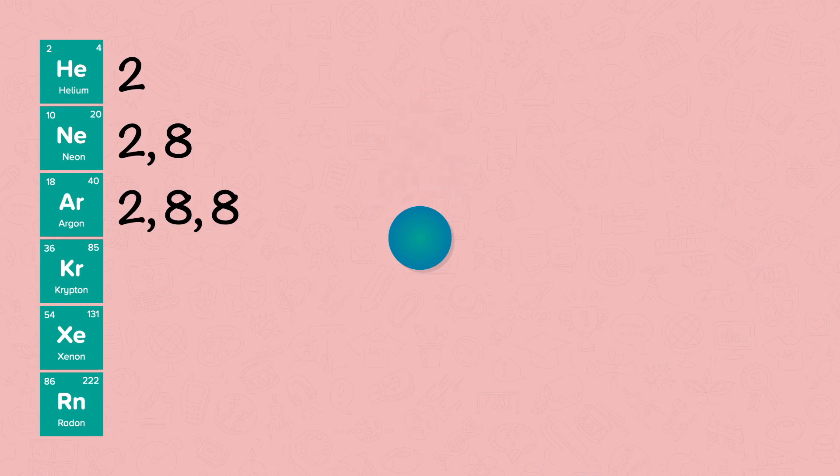Elements in group 0 are inert. They do not normally react with other elements to form compounds. This is because they are stable with a full outer shell of electrons.